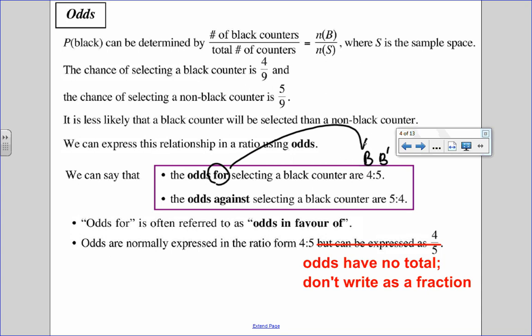So since I'm starting with four, I start with my favorable outcome first. If I want to list the odds against, that would be not black to black. Odds against, I list the event that is against and then compare it to the other. So that would be four to five and five to four. But notice there is no total.